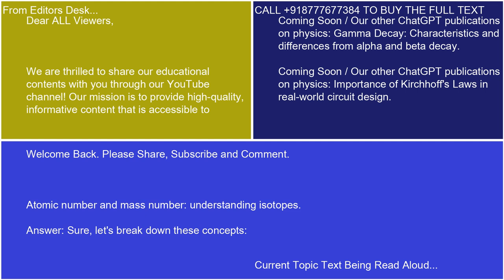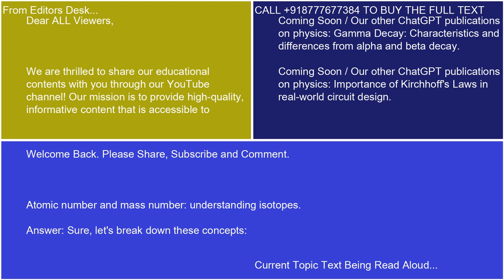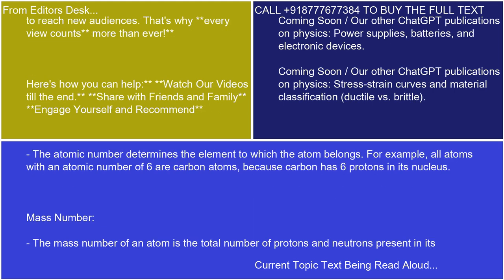Sure, let's break down these concepts. Atomic number: the atomic number of an atom is the number of protons found in its nucleus. It is denoted by the symbol Z. The atomic number determines the element to which the atom belongs. For example, all atoms with an atomic number of six are carbon atoms, because carbon has six protons in its nucleus.